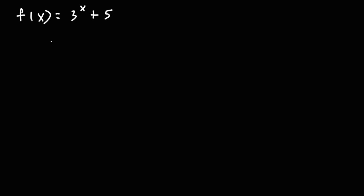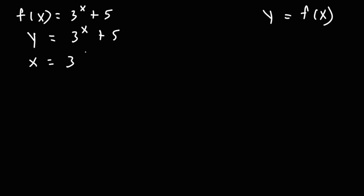In order to find the inverse, the first thing we're going to do is replace f(x) with y, because these two equal each other. In the next step, we are going to switch x and y. By doing this we create an inverse function, represented by this symbol, equal to this new y variable which was equivalent to the original x variable.